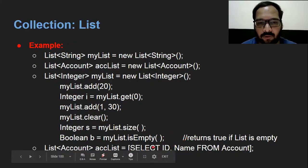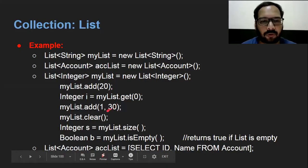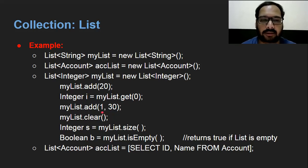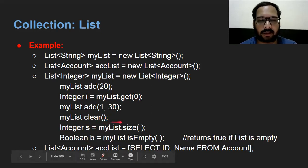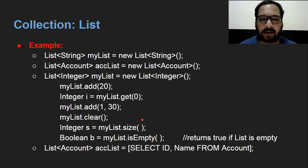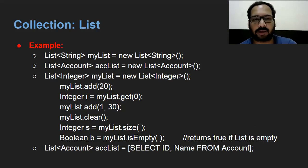Let me also show you how we can query records from the database. Focus on these list methods: add, get to retrieve a value at a particular index, add at index with a value, clear to clear the list, size to get the list size, and isEmpty to check if the list is empty. All these methods will be discussed in detail in a separate video for List. Now I'm writing: List of Account accList equals to [SELECT Id, Name FROM Account LIMIT 2]. This is SOQL — we are querying data available under the Account object and storing the list inside accList. I'm going to display this and execute.